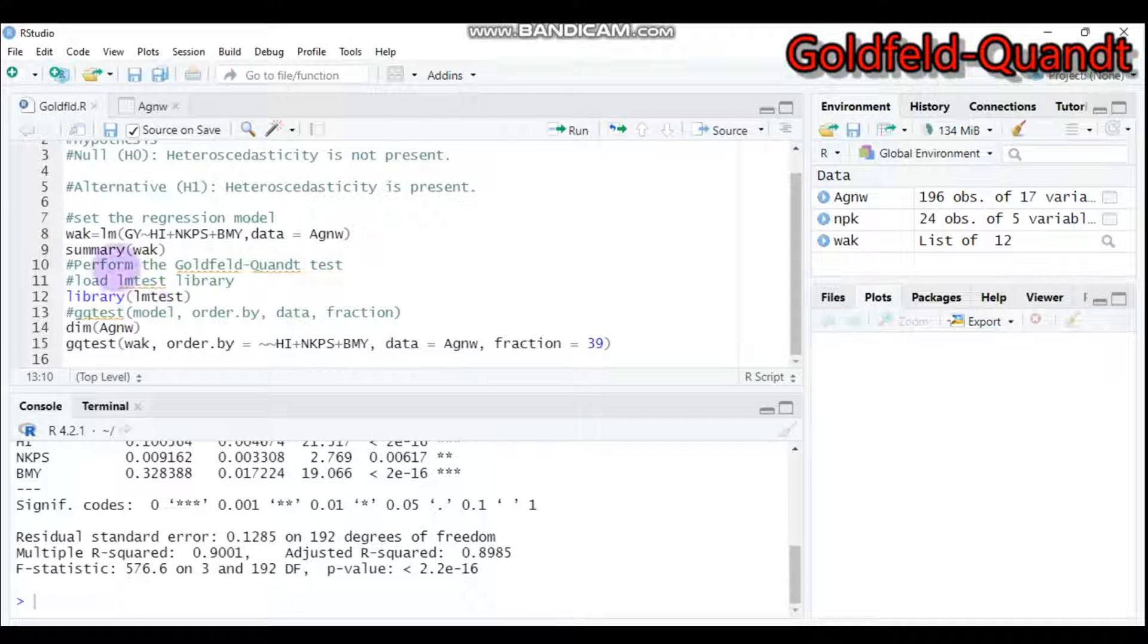In our case, our model is WAC. Order.by means the predictor variables in the model, so the predictors are HI, NKPS, and BMW. Data means the name of the dataset, which is AGNW. And fraction means the number of central observations to remove from the dataset, which is 20% of your total observation.